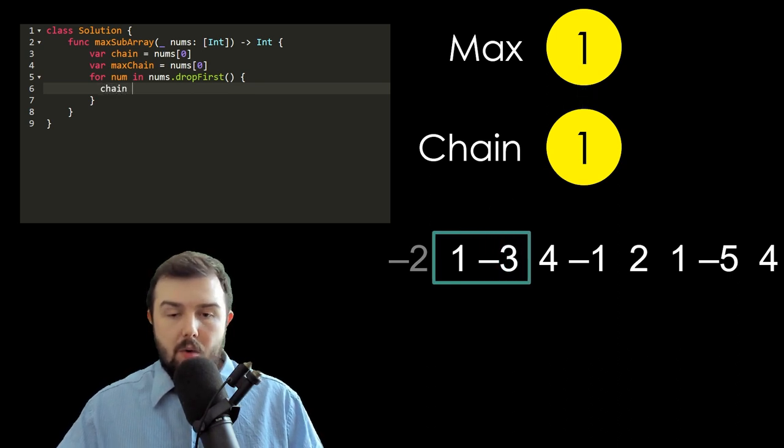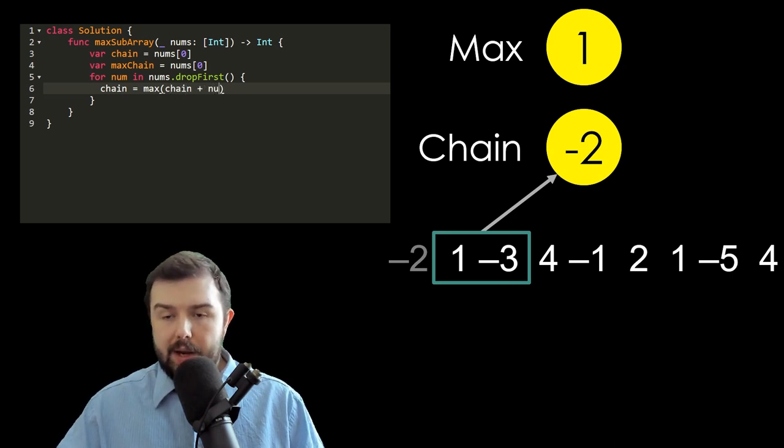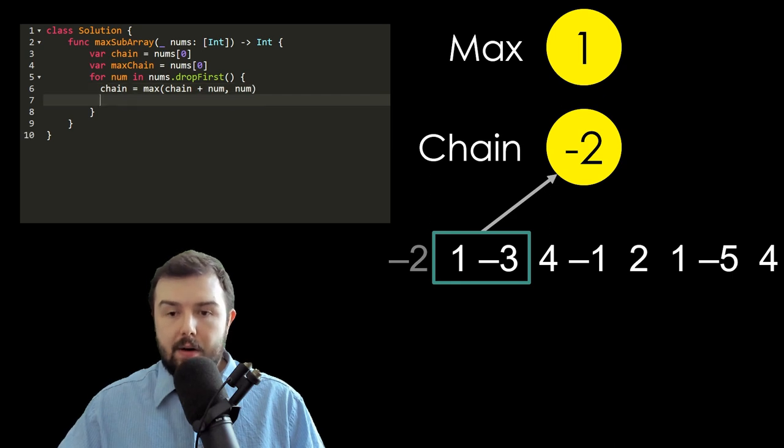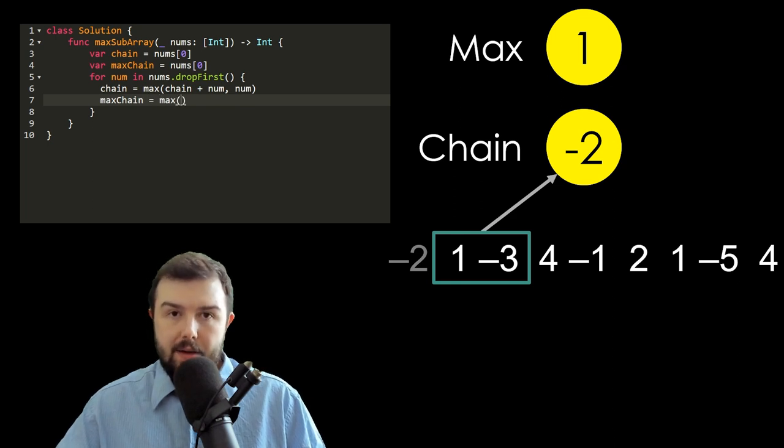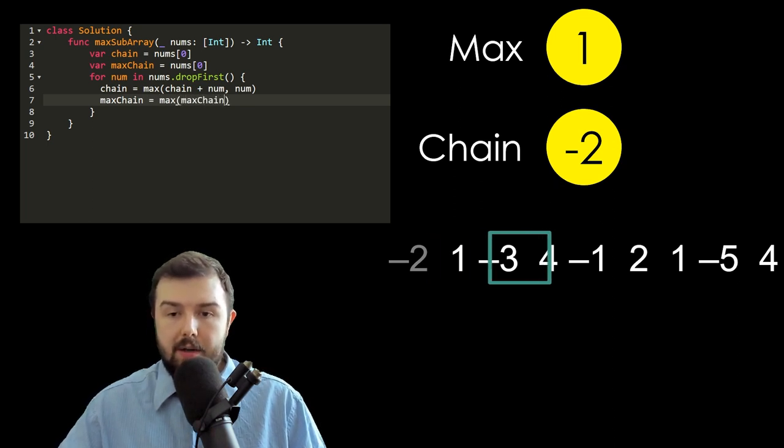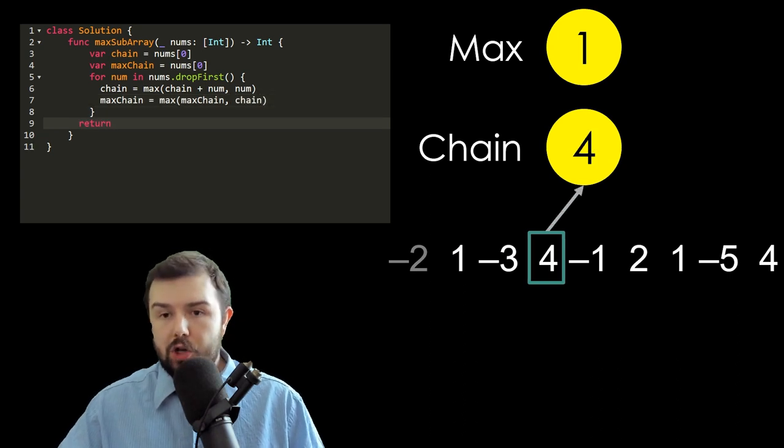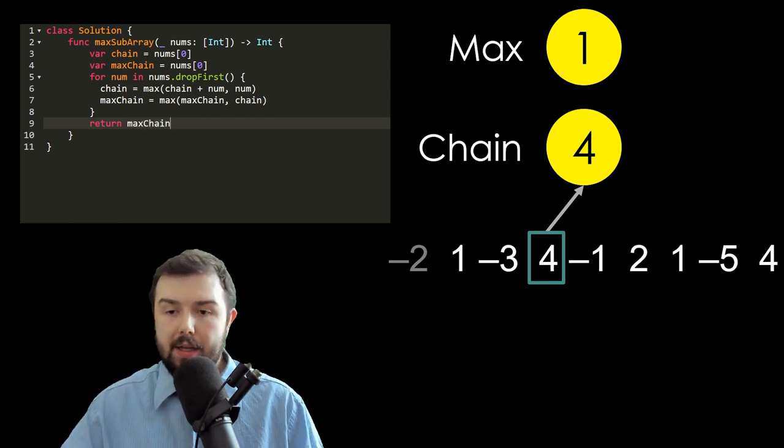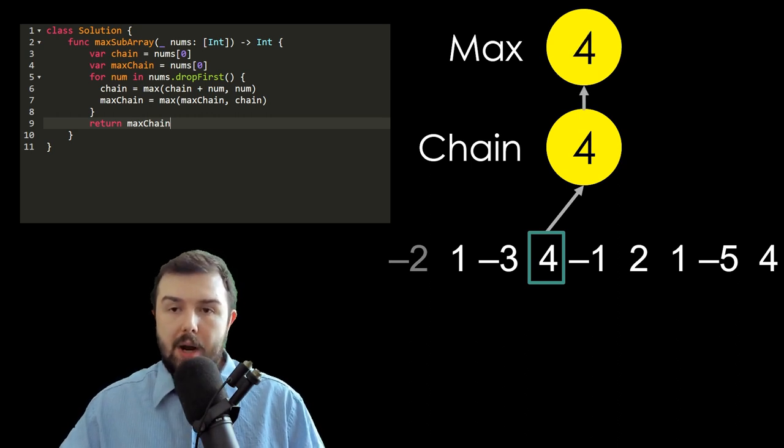We expand our window and our chain becomes minus two because one plus minus three is minus two. We save to our chain either the sum of current chain plus current number, or only the current number. So the next number is four. Four becomes our chain because we're not interested in negative numbers, because four is greater than the sum with anything else.